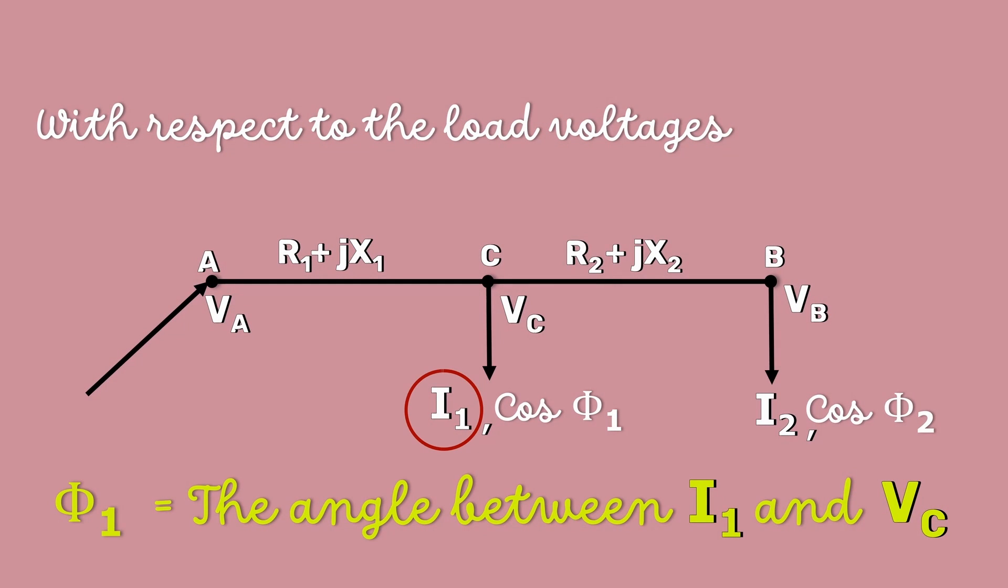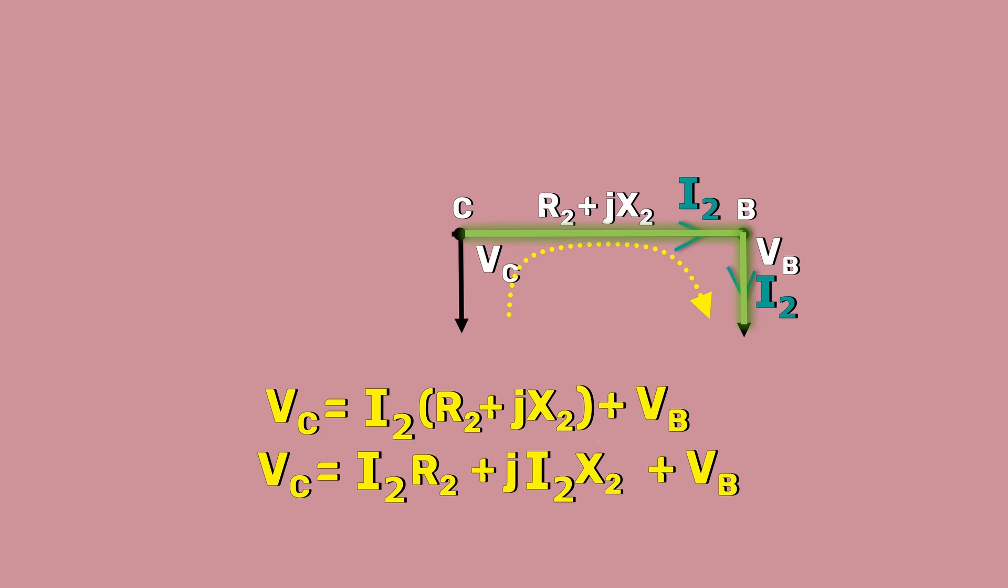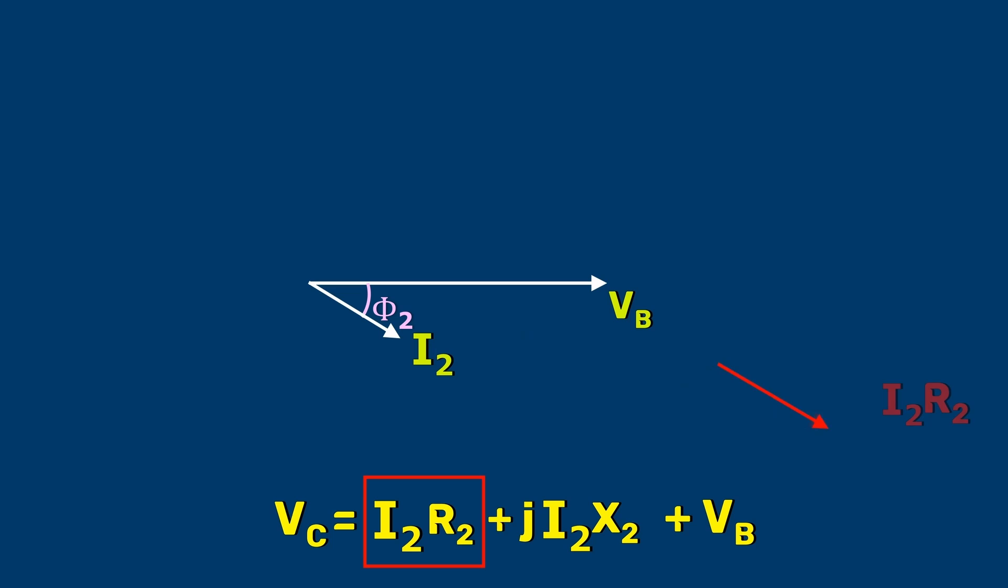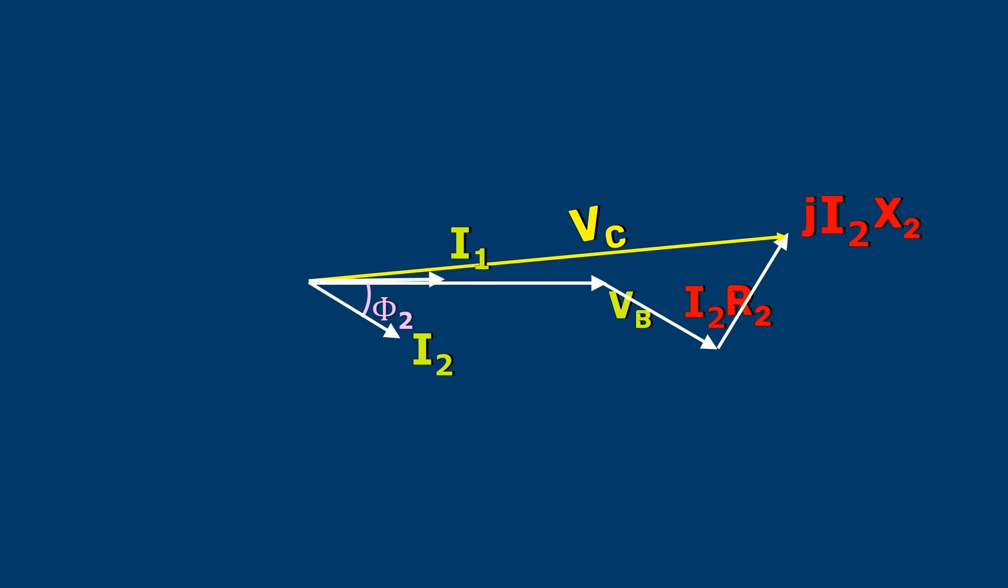We cannot represent I1 yet because we still don't have VC in our diagram. So, let's represent the VC first. For that, we need I2R2 and then JI2X2. The resultant of these three vectors is VC. Now, we can draw I1. I1 lags the voltage VC by an angle phi1.